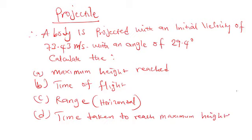Now I would like us to apply the equations we stated previously on projectiles. A body is projected with an initial velocity of 73.43 meters per second with an angle of 29.4 degrees. Now we are expected to calculate the maximum height reached, the time of flight of the body, the range (there's a horizontal range), and the time taken to reach to get to the maximum height. Now let's start with the maximum height reached. Remember the formula for